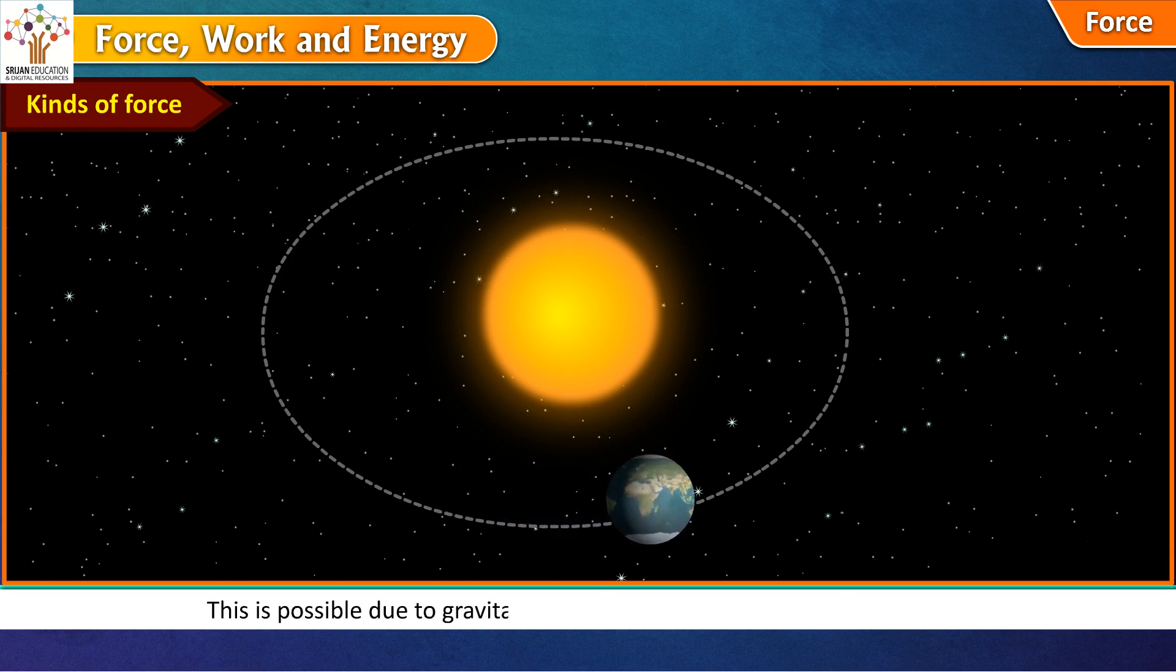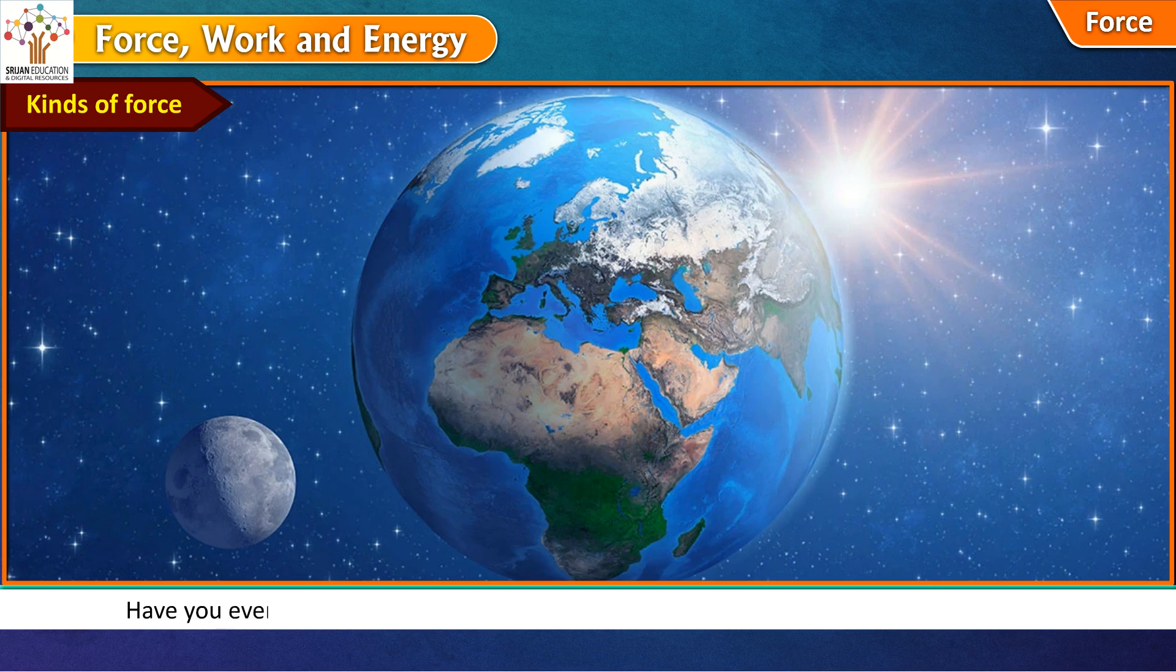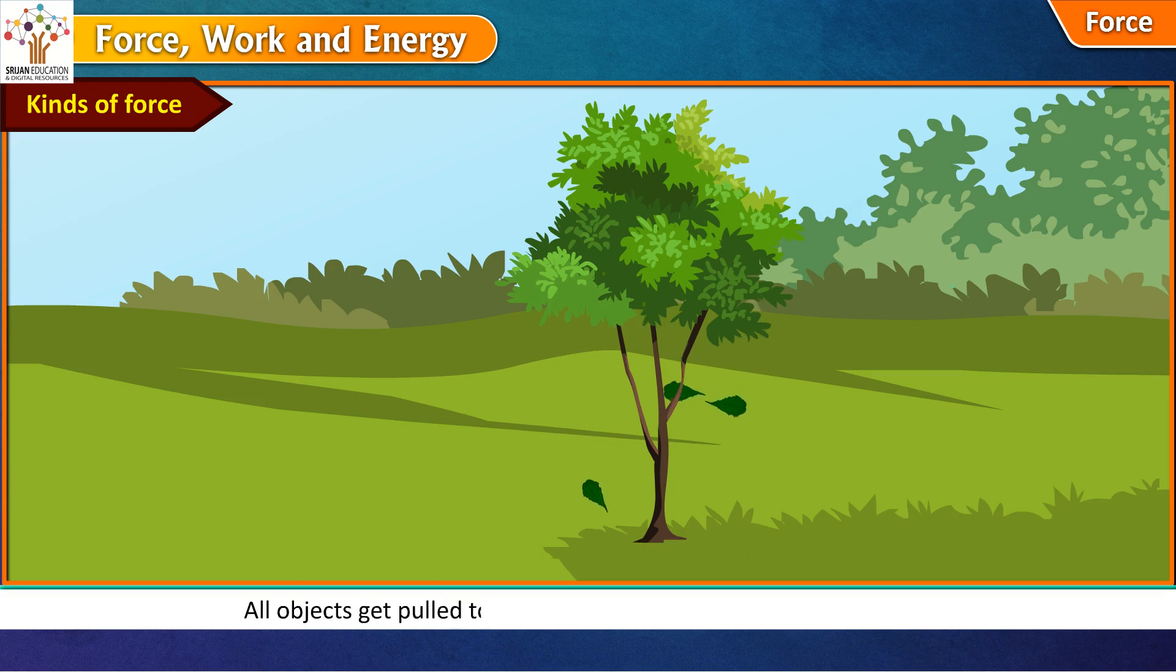Have you ever wondered why the water from the oceans does not spill out in the space? This is also because of the gravitational force. All objects get pulled towards the earth due to gravitational force. The gravitational force is a pulling force.